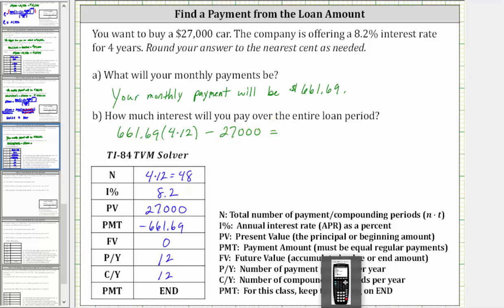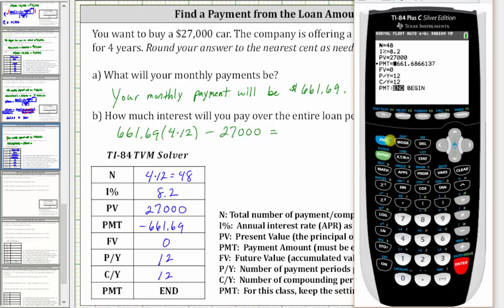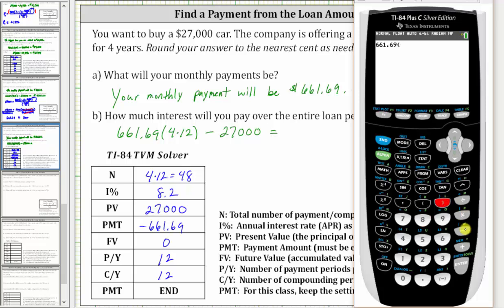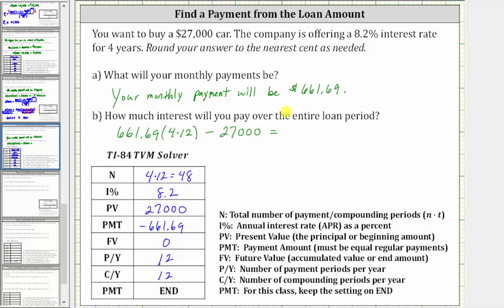Going to the calculator, we press Second, Mode (Quit) to return to the home screen. We enter 661.69 times 48 minus 27,000, which gives us the interest of $4,761.12. So over the loan period, you pay a total of $4,761.12 in interest.